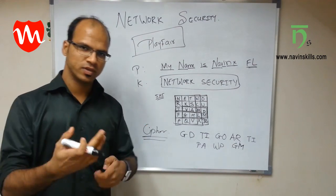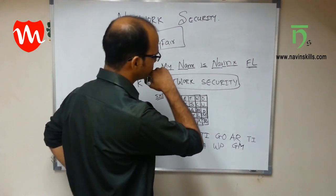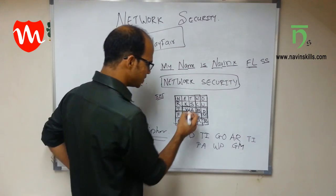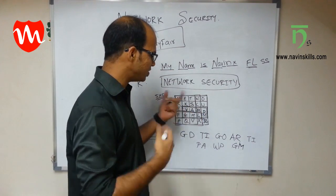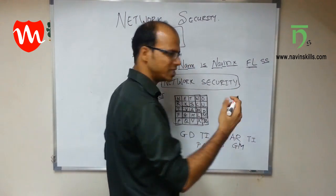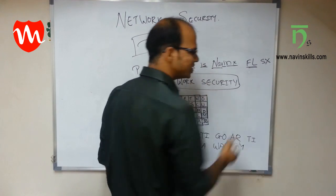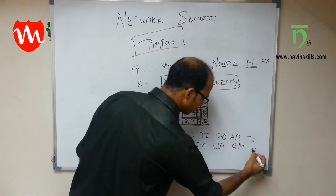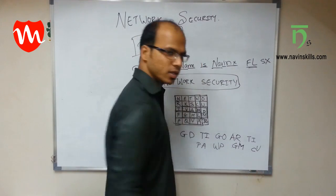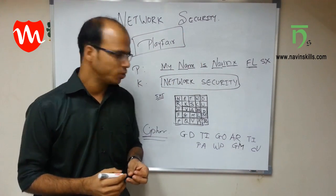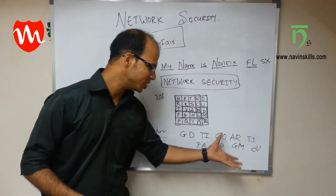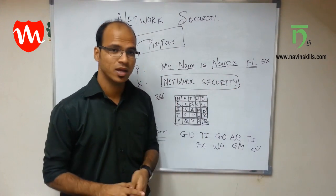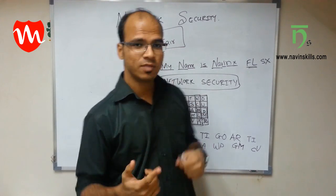What if you have two identical letters back to back, like S-S? You can't say it's next or up or down. In that case, replace the second letter with X, so it becomes S-X. Then S is here and X is here — form a box. For S you get C and for X you get V. So the final steps to implement Playfair: create the keyword matrix, fill remaining alphabets, create pairs from plain text, and apply diagonal, same-row, or double-letter rules as needed. That covers Playfair — next concept will be in the next video, thank you.